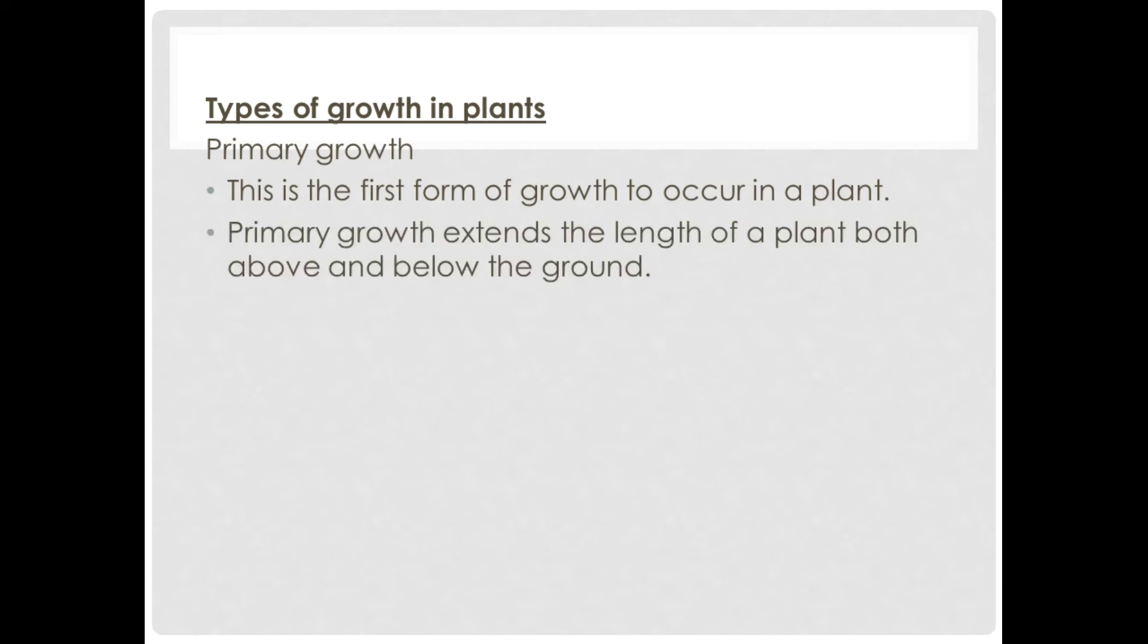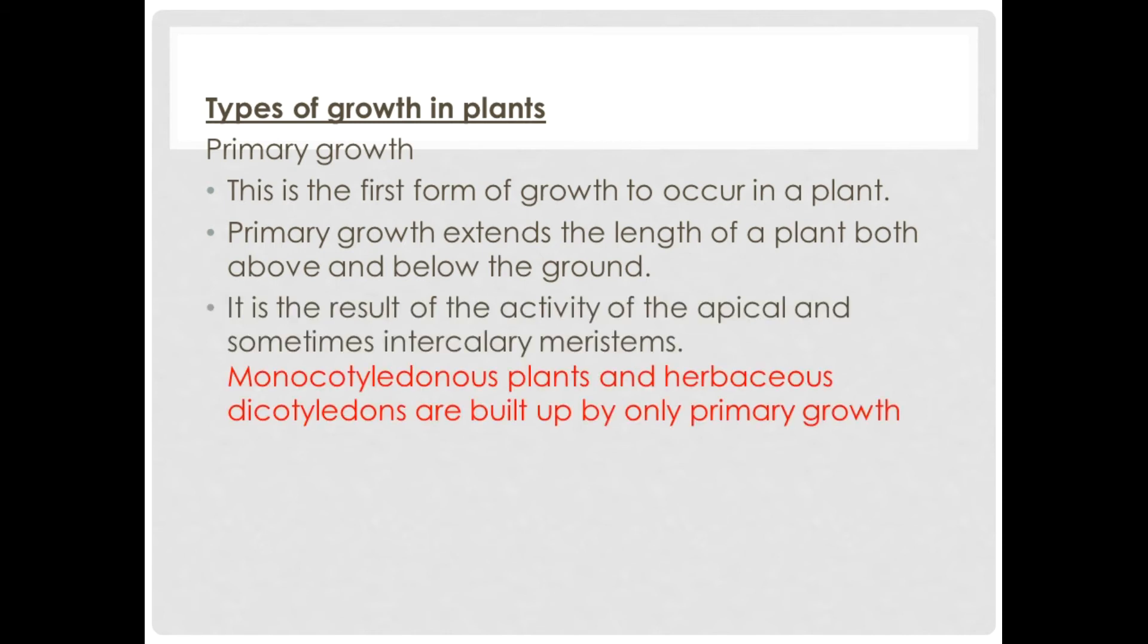Let's take a look at the types of growth in plants. First of all, we've got primary growth. This is the first form of growth to occur in a plant. Primary growth extends the length of a plant both above and below the ground. It is the result of the activity of the apical and sometimes intercalary meristems. Monocotyledonous plants and the herbaceous dicotyledons are built up only by primary growth.